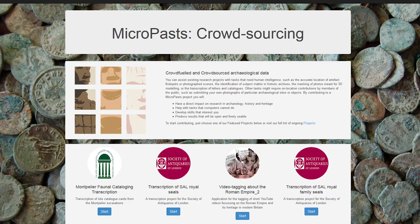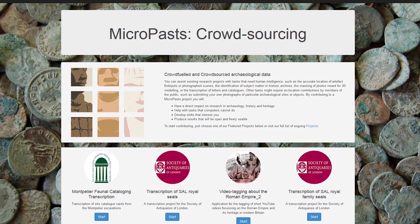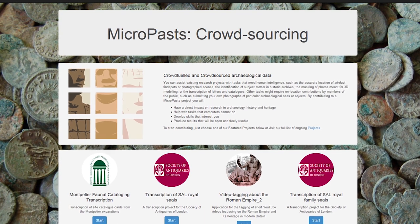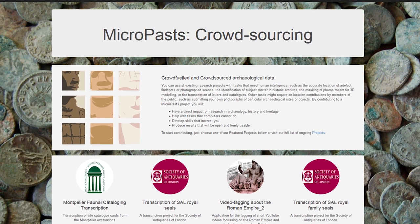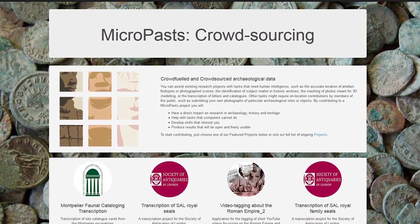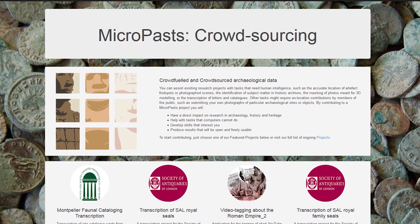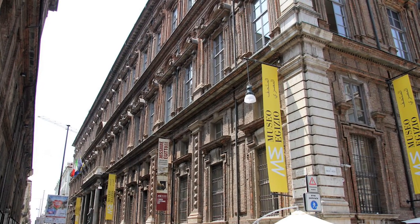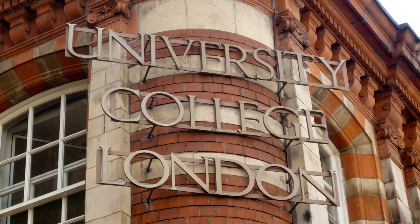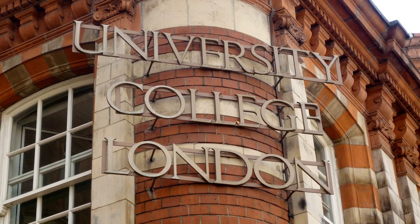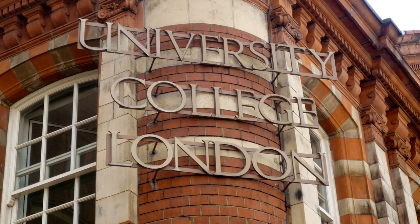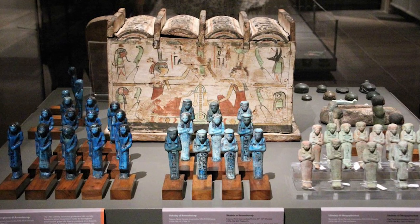An example of public archaeology in the field of museums is MicroPasts, a platform for archaeology crowdsourcing. Born in 2013 at University College London, MicroPasts is useful for cultural heritage operators for managing collections and carrying out scientific research with the support of the public. In this context, the Egyptian Museum in Turin, Italy, started a collaboration with UCL for introducing new methods of public participation — in particular, using MicroPasts to realize 3D models of objects from the Egyptian Museum, for both scientific and educational purposes.